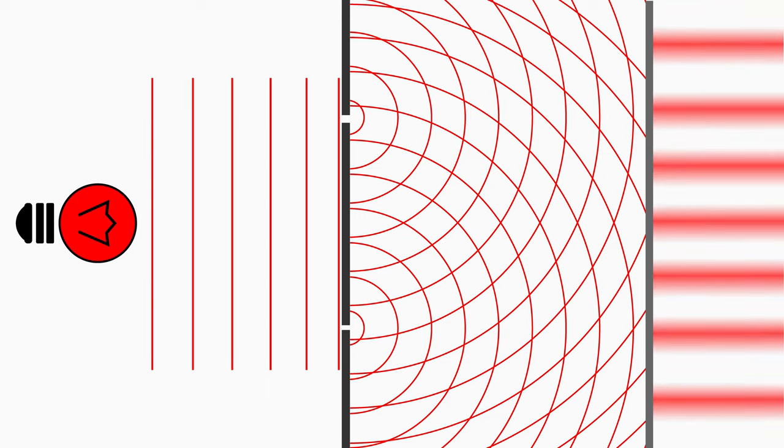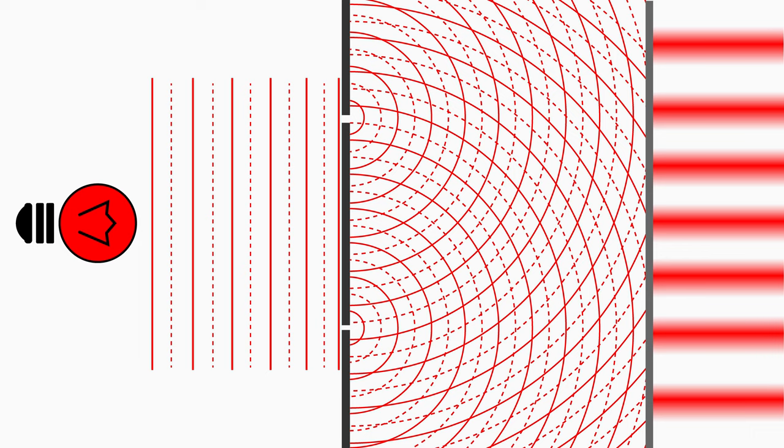But how does the pattern of bright and dark fringes on the screen come about? These red lines mark the wave maxima. Exactly in between are thus the wave minima. Let's mark them with dotted lines so that we can follow them better.